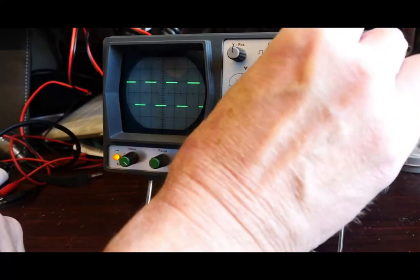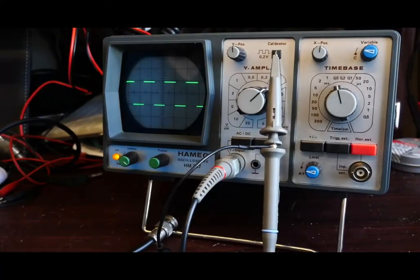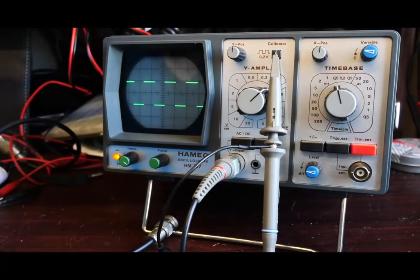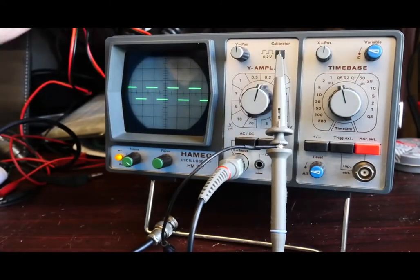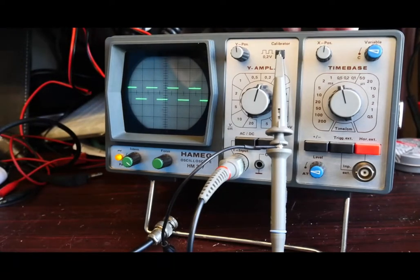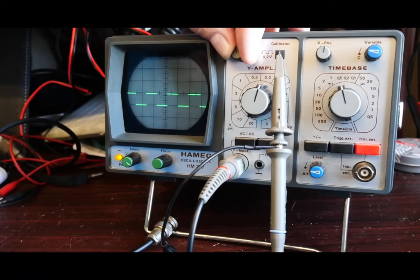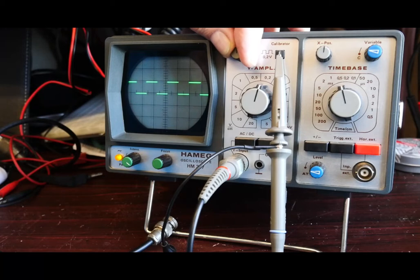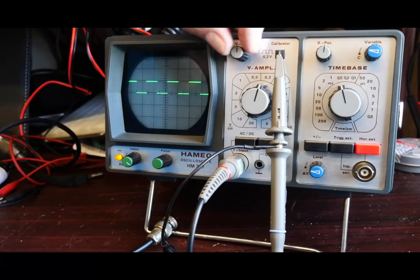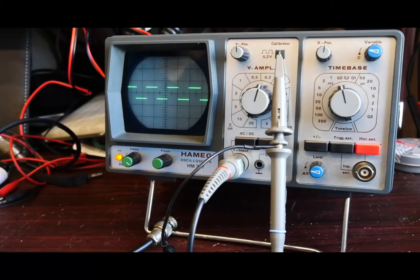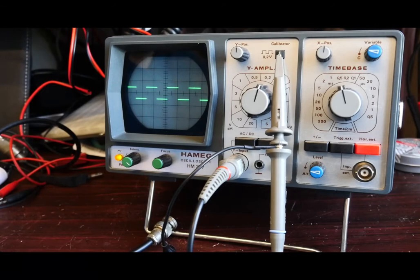There you are, you can see it's displaying the calibration signal, which is 0.2 volts. Let's go to 0.2 volts per division. If we adjust the Y position, you can see that one division there is indeed 0.2 volts according to the calibrator. So nice little scope, and I'm rather pleased with it.